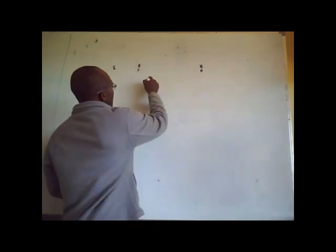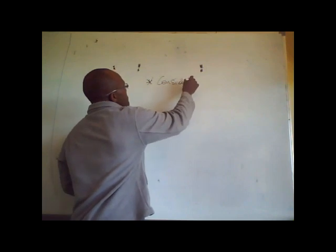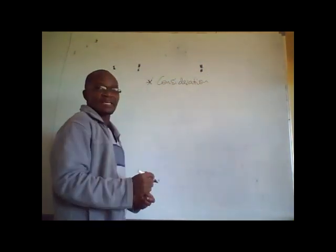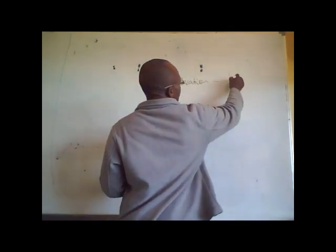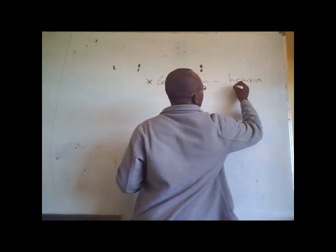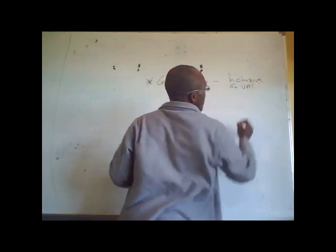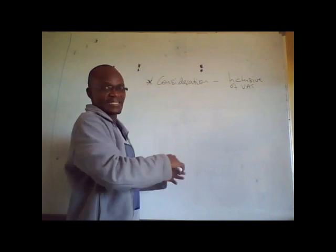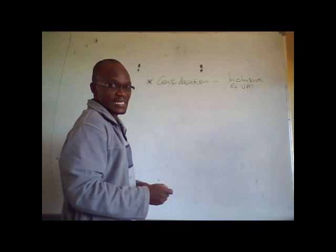I am going to demonstrate here. There is what is called consideration. Consideration is an amount which is inclusive of VAT. So we are saying if you are purchasing something and there is VAT in that item, in the price of that item, then that's a consideration.